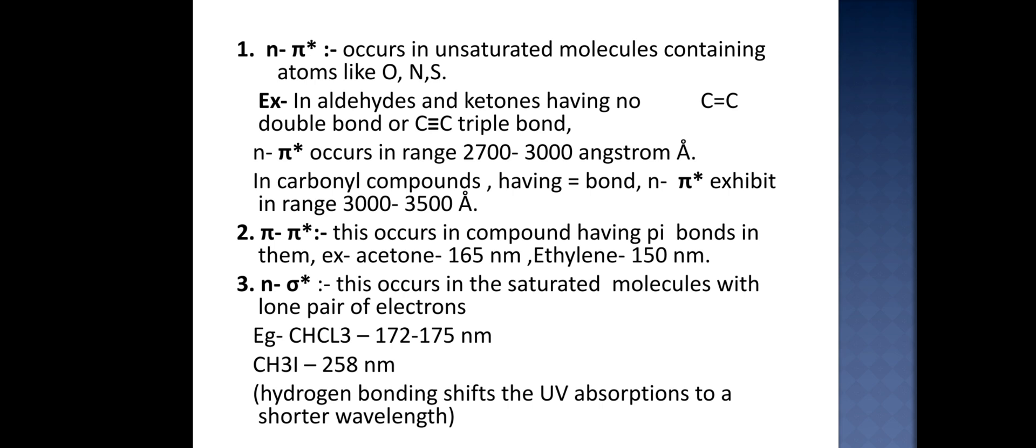n to σ* transition occurs in the saturated molecules with lone pair of electrons. Examples include chloroform, which has the wavelength 172 to 175 nanometers, and methyl iodide, which has the wavelength 258 nanometers. Hydrogen bonding shifts the ultraviolet absorption to a shorter wavelength.